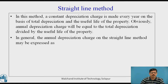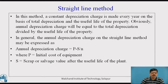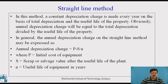The annual depreciation charge will be equal to total depreciation divided by useful life of the property. The annual depreciation charge on the straight line method may be expressed as: annual depreciation charge = (P − S) / N, where P is the initial cost of the equipment in rupees, S is the salvage or scrap value after the useful life of the plant, and N is the number of years of the useful life of the equipment or plant.